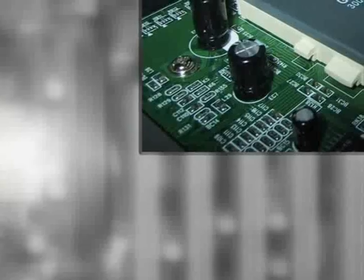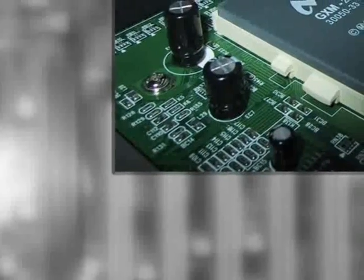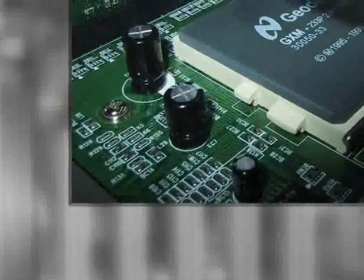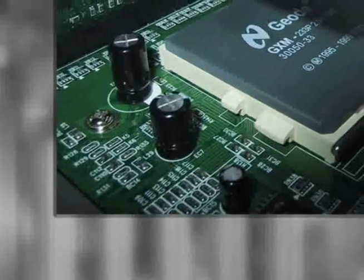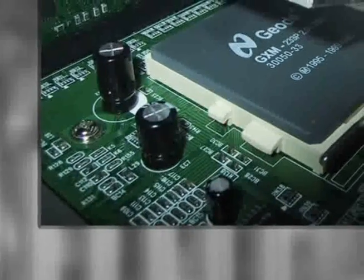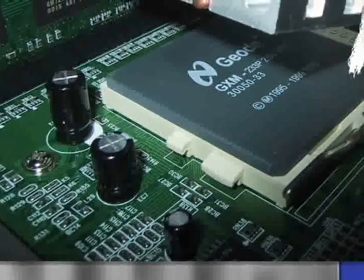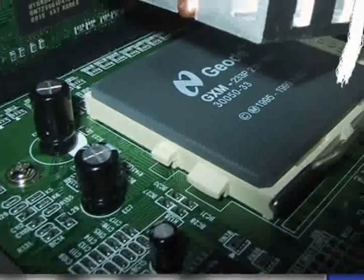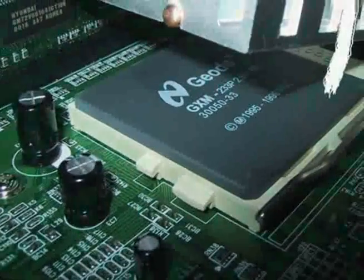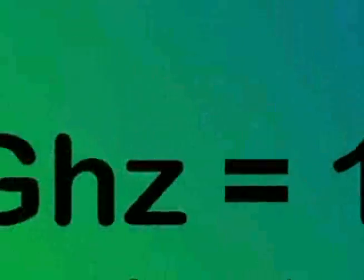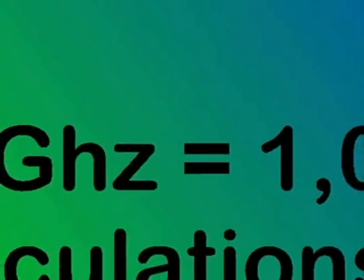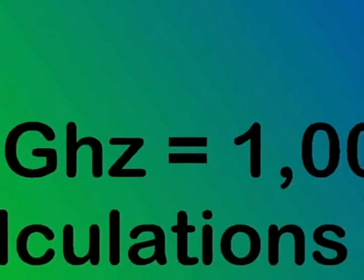One of the most important — if not the most important — component of a computer is what we call the processor. I'm sure all of you have seen or heard Intel commercials or computer commercials talking about different processors with different speeds. These speeds are measured in what we call gigahertz. One gigahertz is equal to about one billion calculations per second.